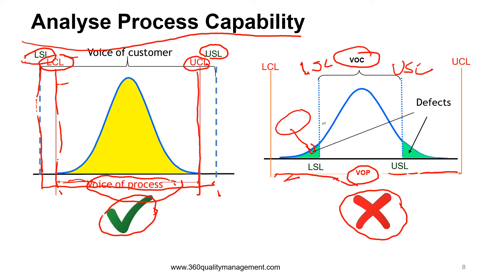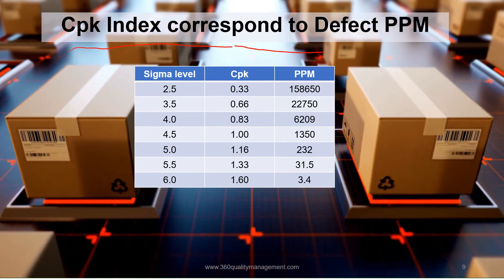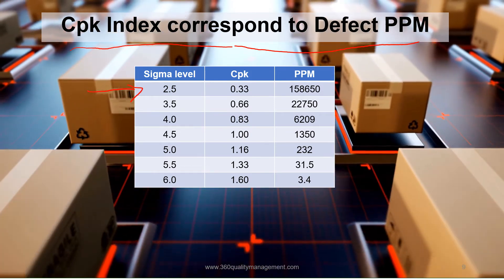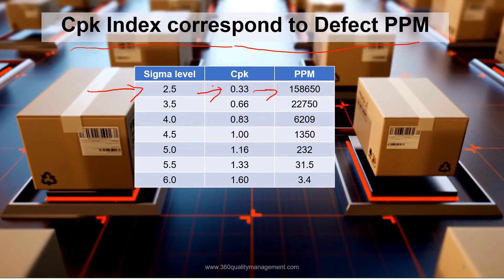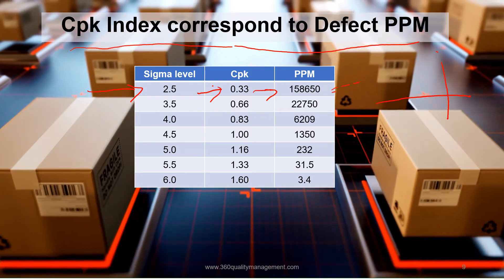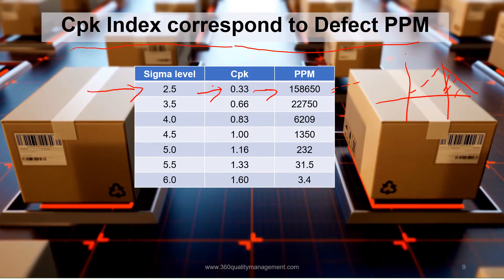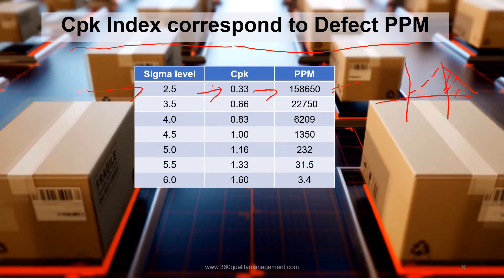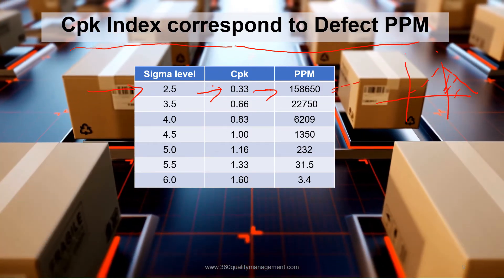The CPK index values correspond to defect PPM levels. At a sigma level of 2.5, which is a CPK of 0.33, we will have about 160,000 rejects — meaning a lot of parts will be outside the spec limits, either on the upper or lower spec side, depending on whether the CPK is CPU or CPL.